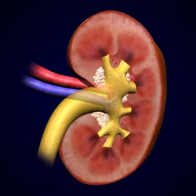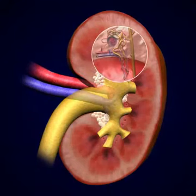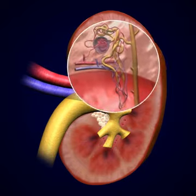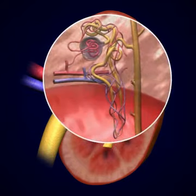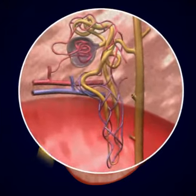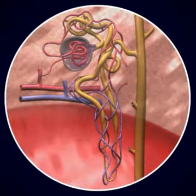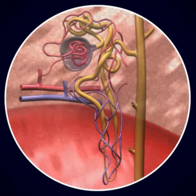More than a million microscopic units called nephrons are located in the interior of the kidney. Each nephron is similar to a tiny funnel with a very long stem. The stem, however, has many bends along it.